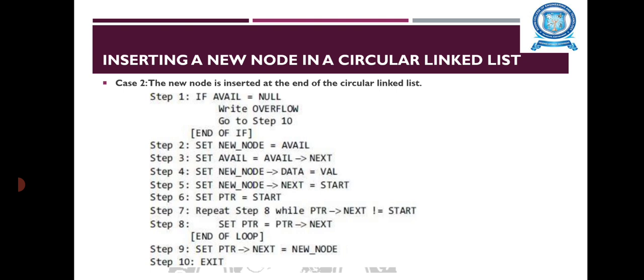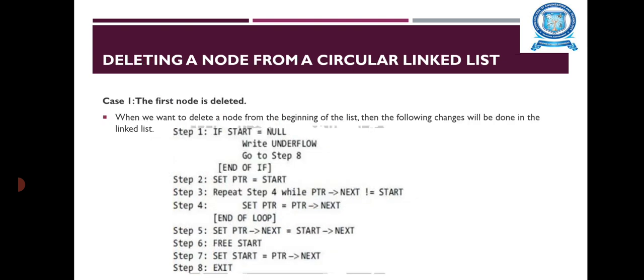In the while loop, we traverse through the linked list to reach the last node. Once we reach the last node, we change the next pointer of the last node to store the address of the new node. Remember that the next field of the new node contains the address of the first node, which is denoted as start.